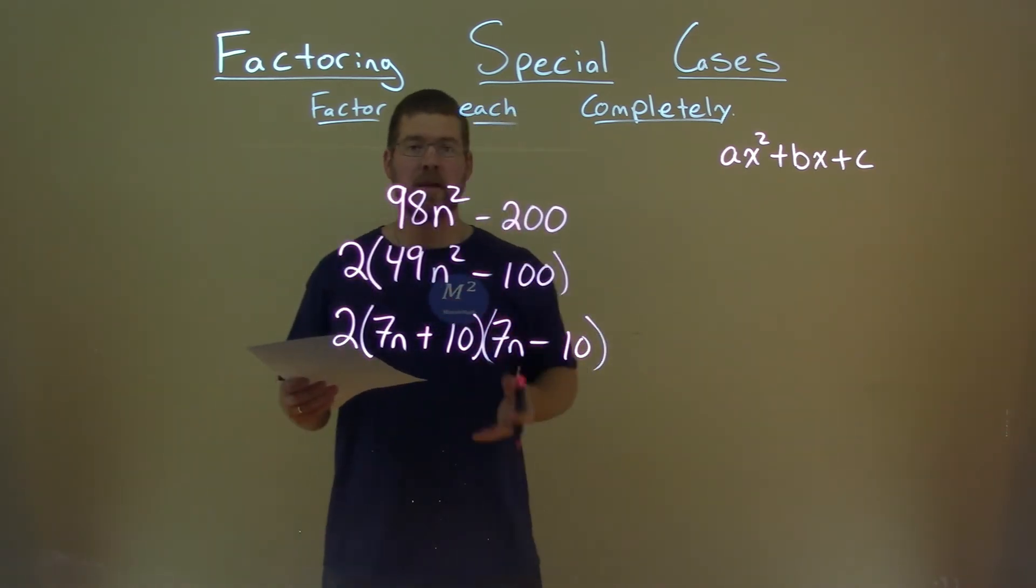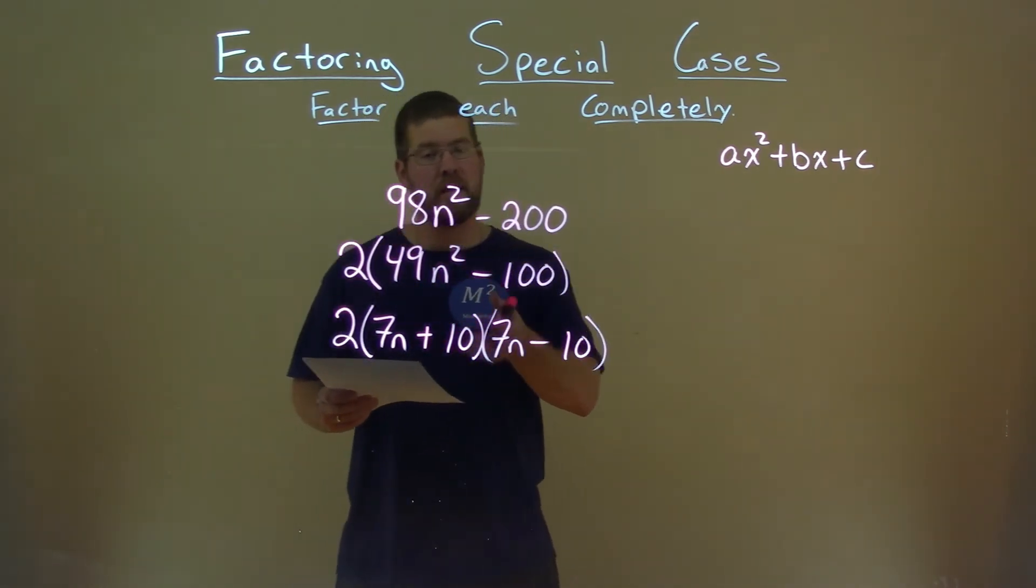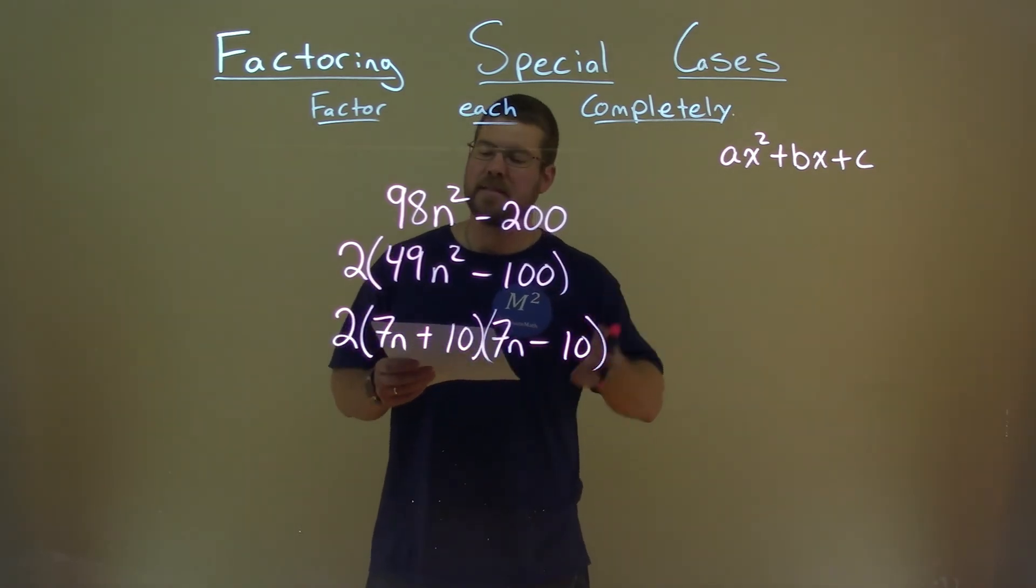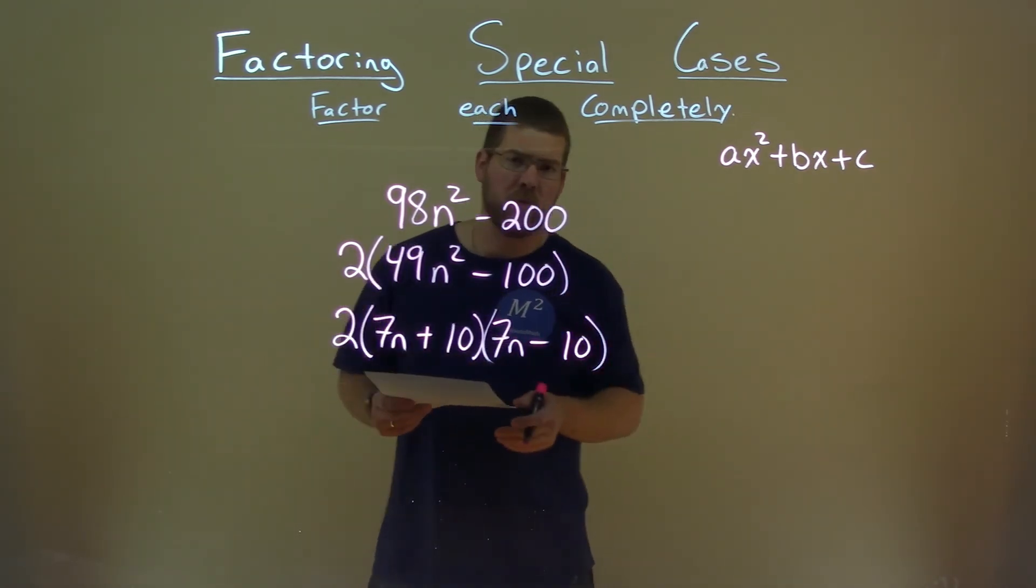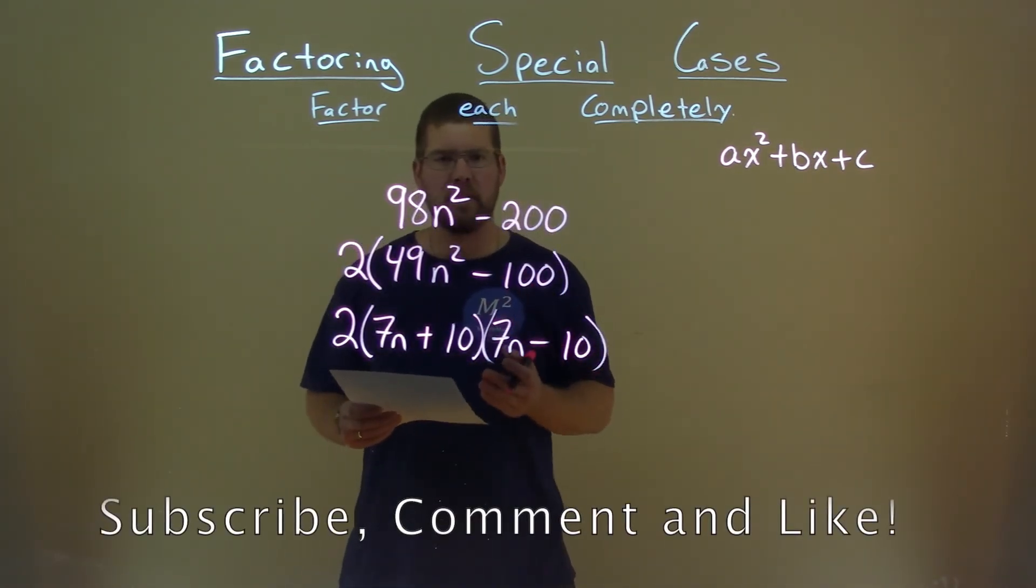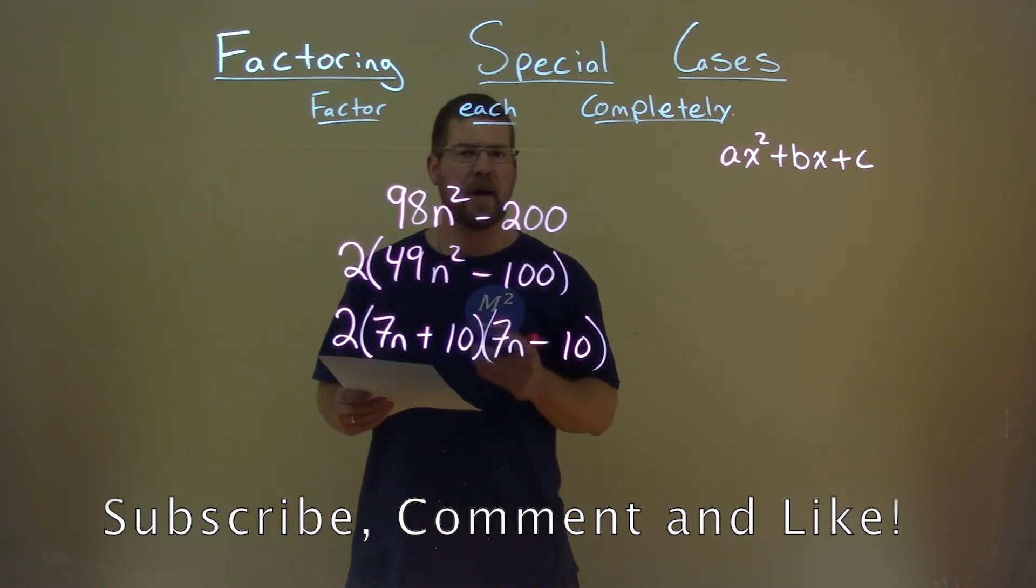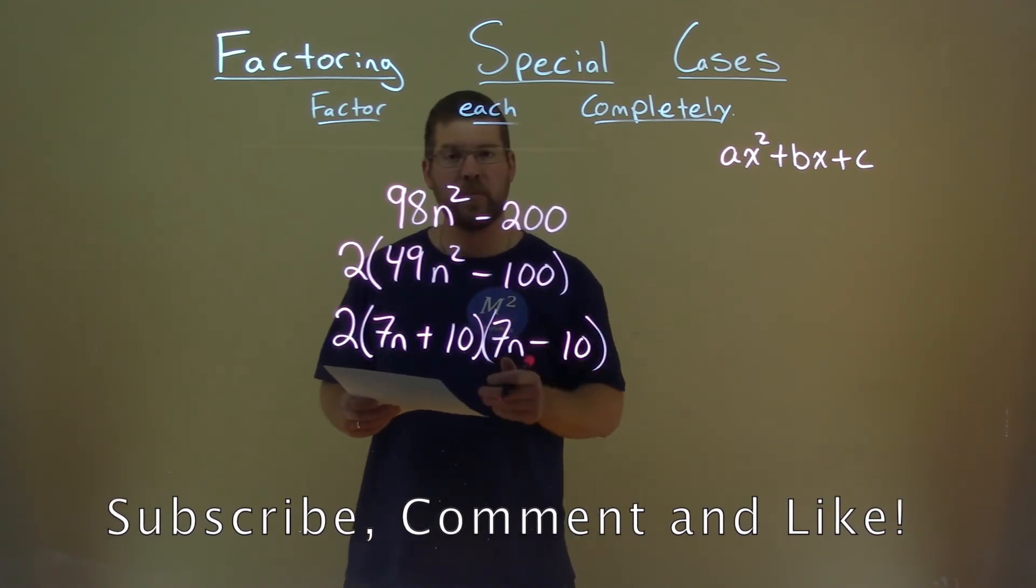So now we have our final answer here. 2 times 7N plus 10 times 7N minus 10. I hope this video was helpful, and if it was, please subscribe to this YouTube channel and like this video. This helps us make more free math lessons for you and for everyone else.